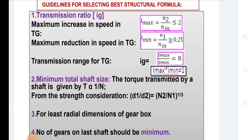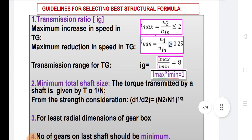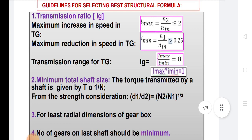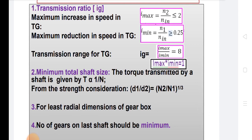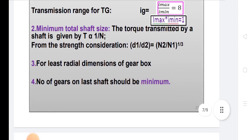There are some guidelines for the base structure formula: Imax = N2/NIN ≤ 2, Imin = N1/NIN ≥ 0.25, Imax/Imin = 8, and Imax × Imin = 1. The torque transmitted by a shaft is given by T ∝ 1/N. From strength considerations, for the least radial dimensions of the gearbox, the number of gears on the last shaft should be minimum.